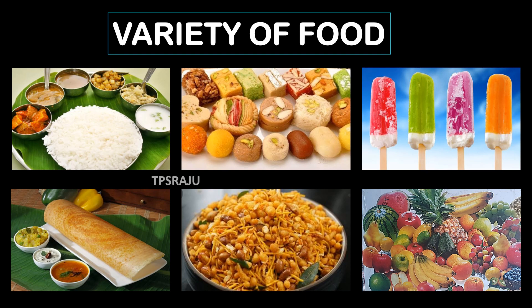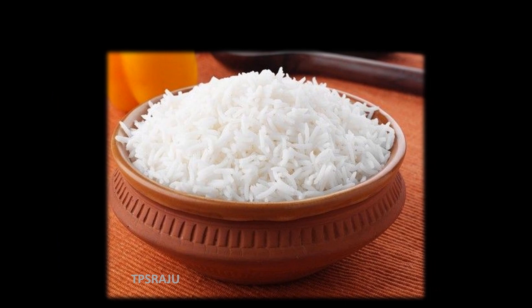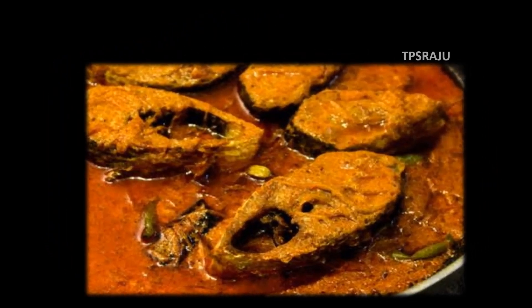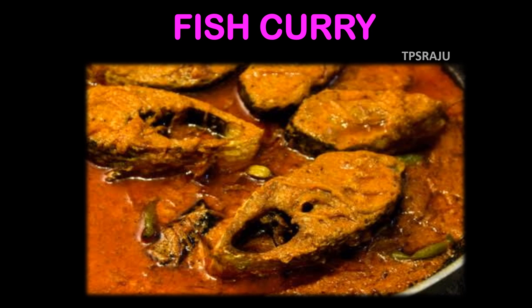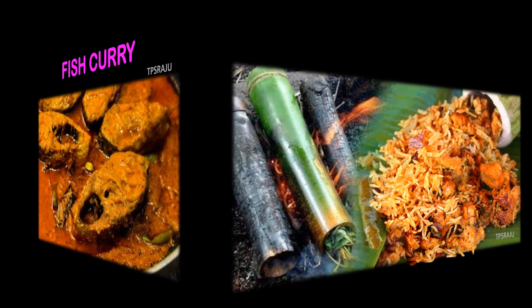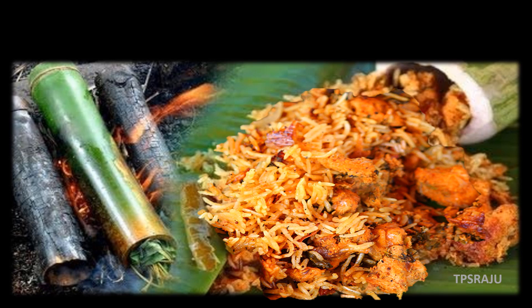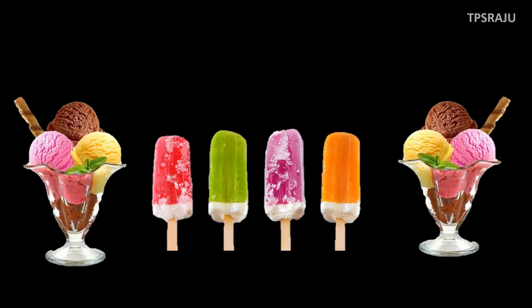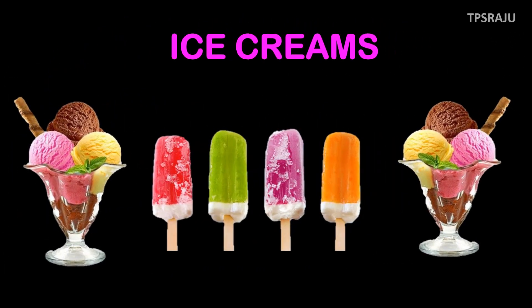Now I am going to show different kinds of food items. See them and tell their names. What is this? Rice. This is? Fish curry. This one is? Bamboo chicken. These are? Ice creams.